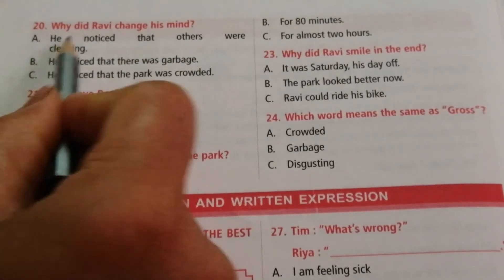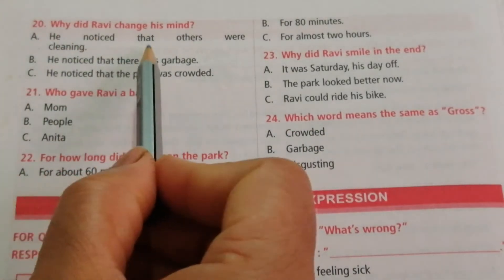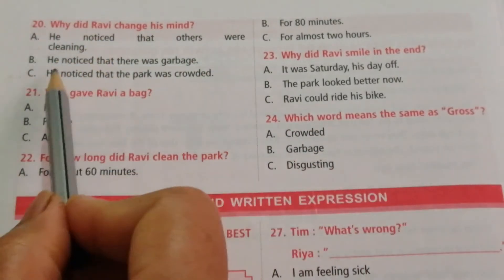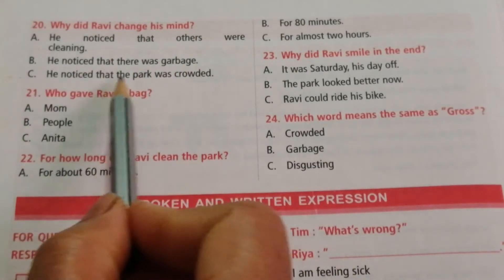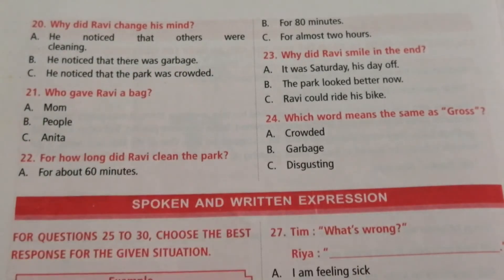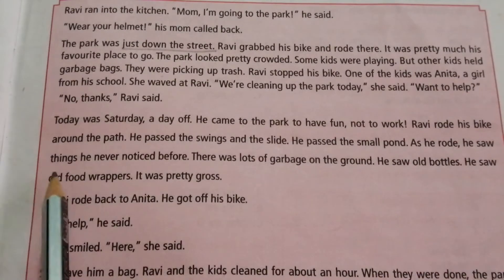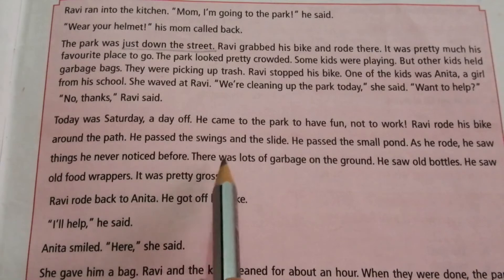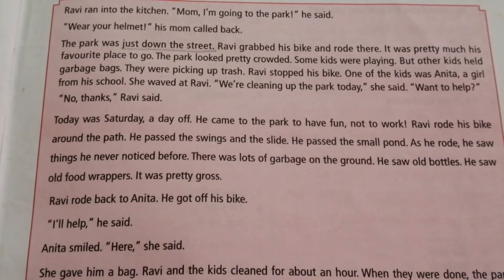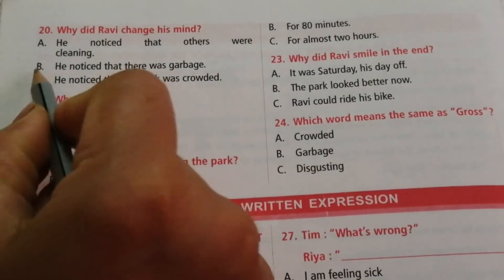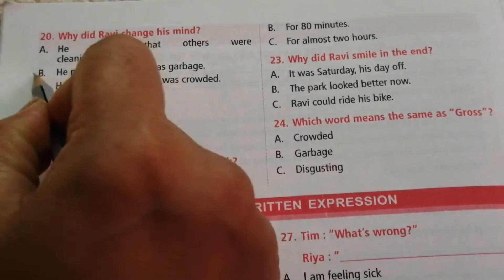Question 20: Why did Ravi change his mind? Options are: he noticed that others were cleaning, he noticed that there was garbage, he noticed that the park was crowded. From the passage: 'As he rode, he saw things he never noticed before. There was lots of garbage on the ground.' The answer is B — he noticed that there was garbage.